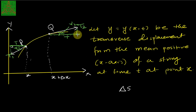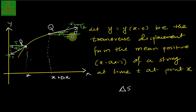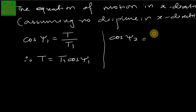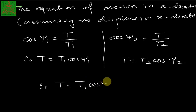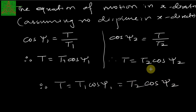In the same manner, since there is no displacement in the x-direction, applying cos ξ2 = T/T2, we get T = T2 cos ξ2. So the equation of motion in the x-direction is: T = T1 cos ξ1 = T2 cos ξ2.